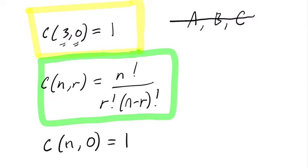So if we use our general formula, I'll say that it has to equal n factorial over 0 factorial, we're choosing nothing here, times n minus 0 factorial.